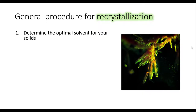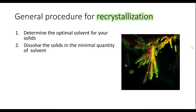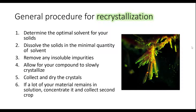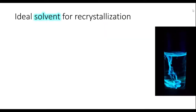The general procedure for recrystallization entails: first, determining the optimal solvent for our solids; then dissolving the solids in the minimal quantity of that solvent; removing any insoluble impurities; and then allowing the compound to slowly form crystals. Then we collect and dry the crystals, and if a lot of our material remains in solution, we can concentrate it and collect a second crop of crystals.